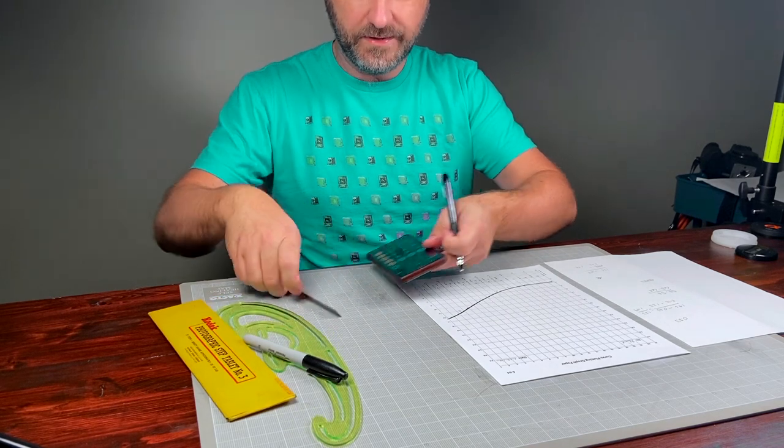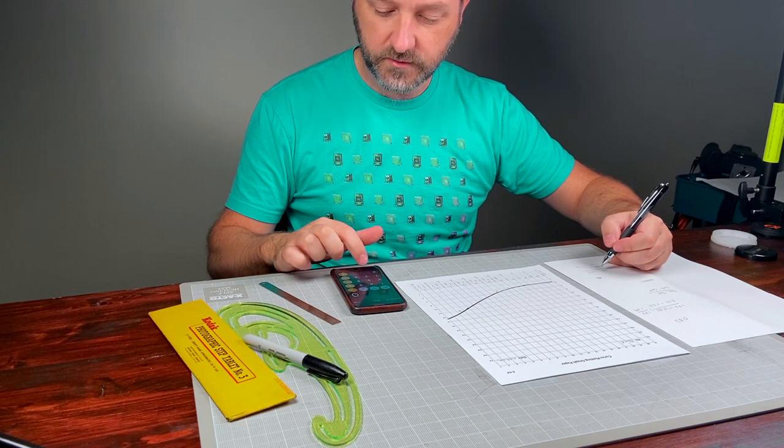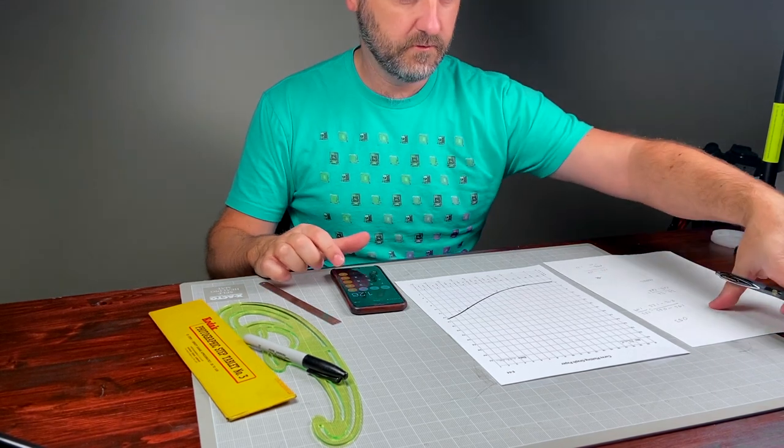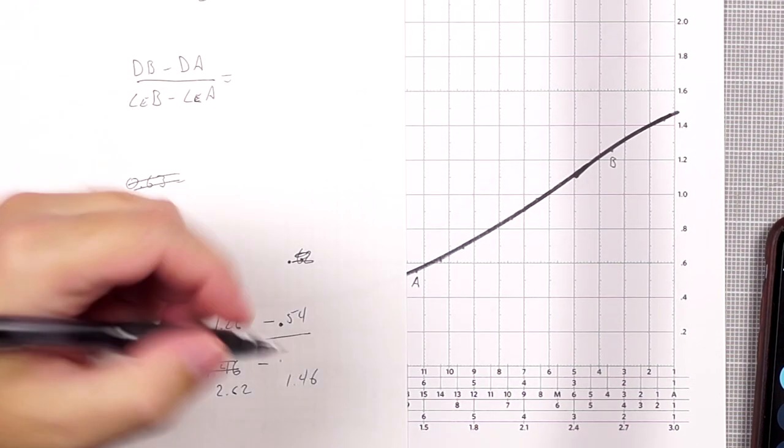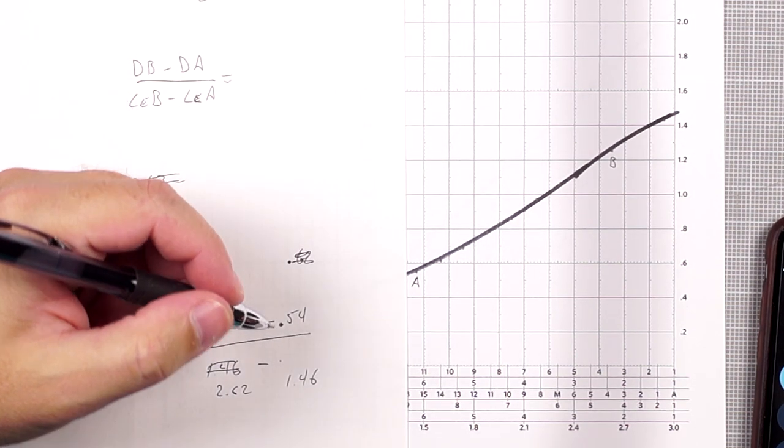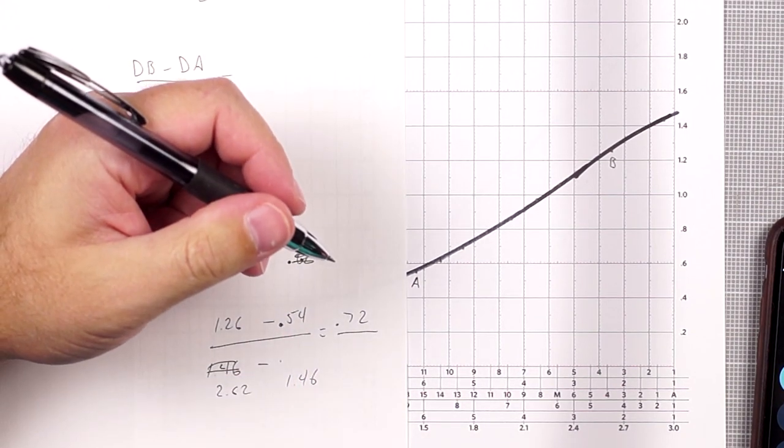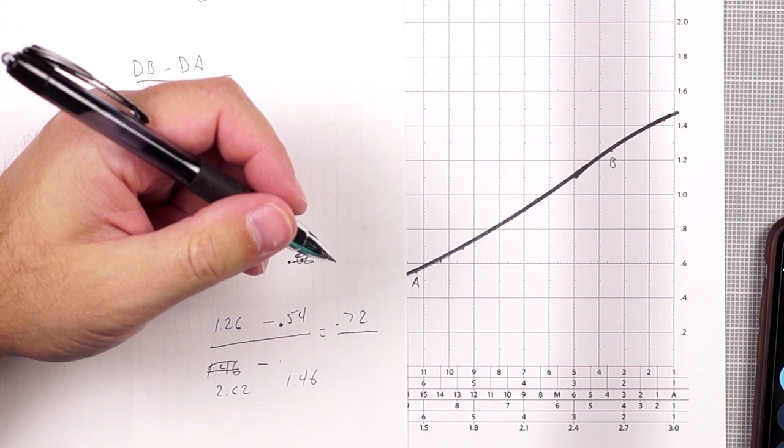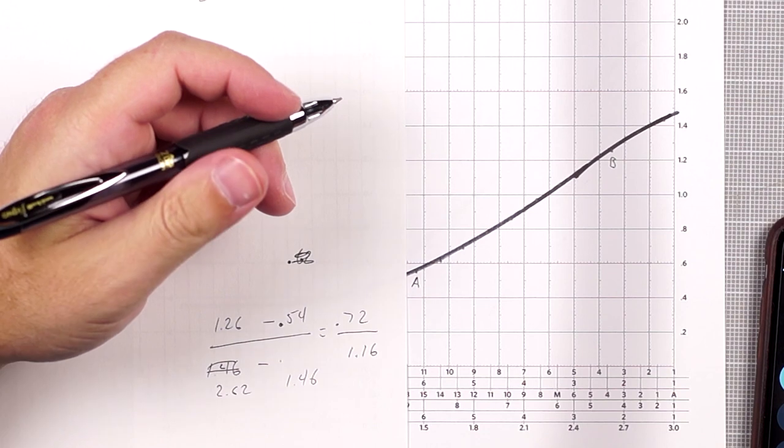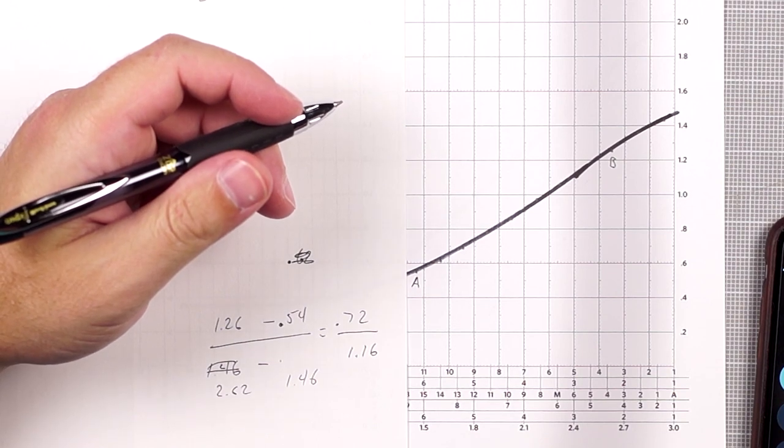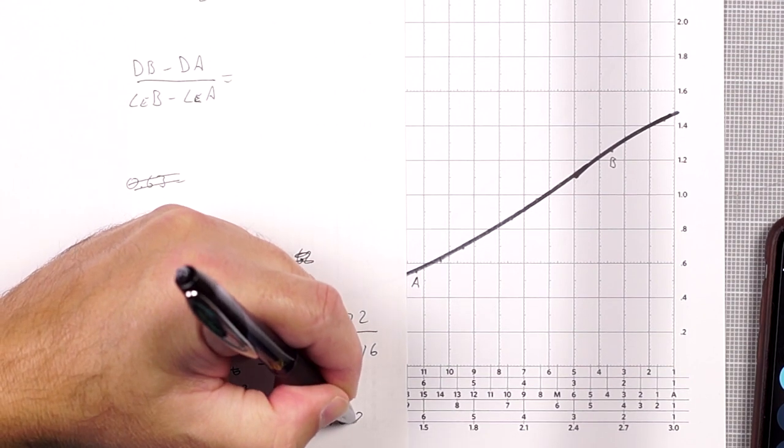So you got to be careful with that. Let's see what our gamma is there. 1.26 minus 0.54 is 0.72. And 2.62 minus 1.46 equals 1.16. So that's going to give us a gamma of 0.72 divided by 1.16, which is 0.62.